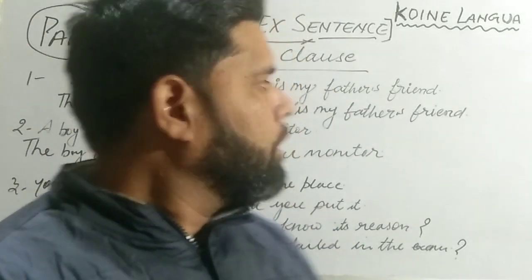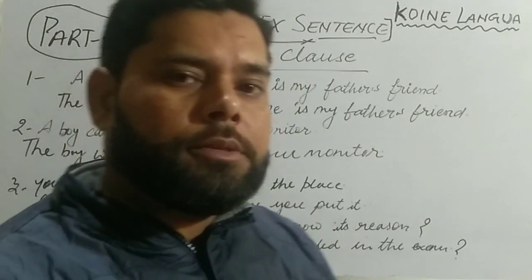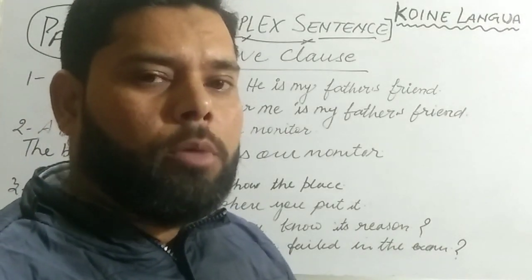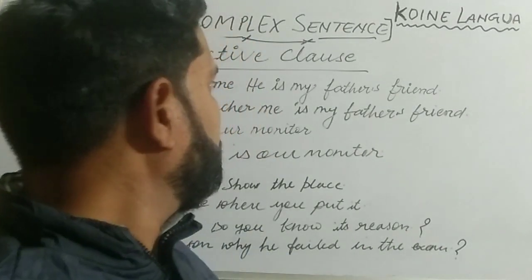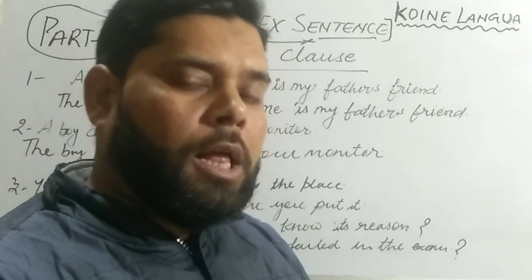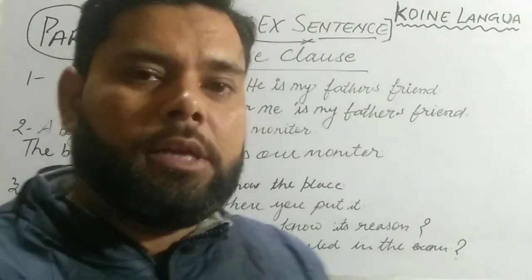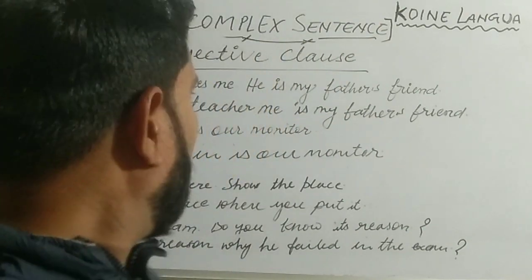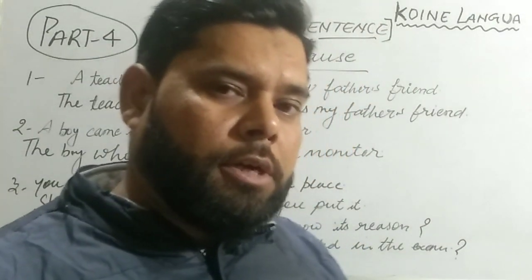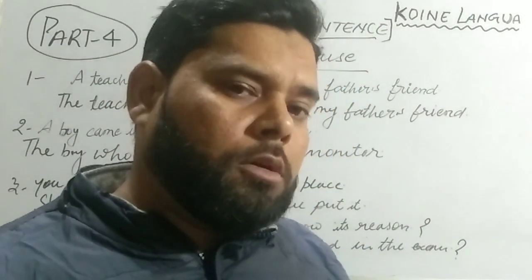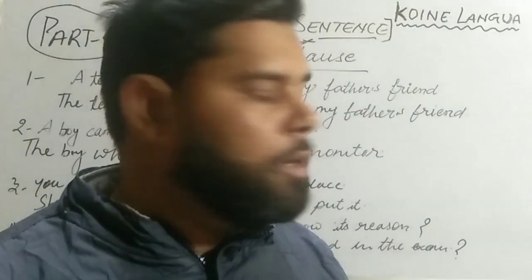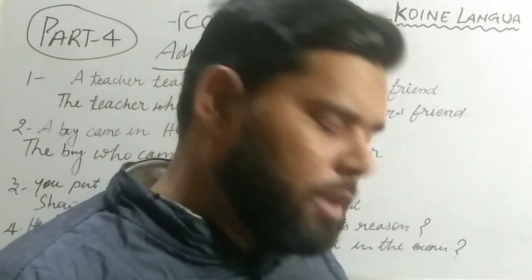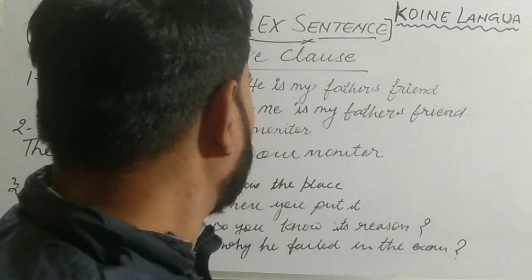Yesterday we learnt about complex sentences. We learnt how to form a complex sentence, especially a noun clause, if two or more sentences are separate. By combining two or more simple sentences into one complex sentence, we can make a noun clause. Through a noun clause we can make a complex sentence.